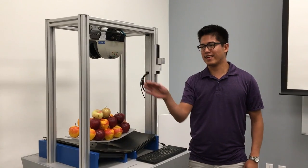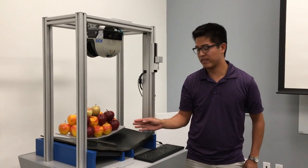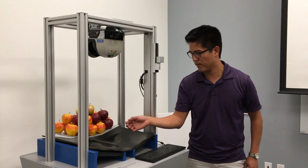This is a non-contact volume and mass flow rate measurement system. As you can see here, we have a 2D laser scanner that's taking a live cross sectional area of these apples that are moving through the conveyor belt.